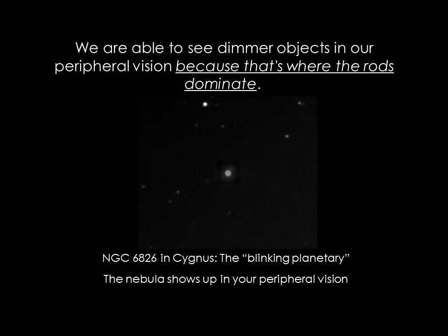There's a planetary nebula I like to show at our observatory nights, nicknamed the blinking planetary. When you look directly at the blinking planetary through the telescope, you can only see the dead core at the center and not the surrounding atmosphere — the nebula part. But if you look at it with peripheral vision, the nebula part becomes visible. You can make the planetary nebula appear to blink on and off by looking at it indirectly and then directly.